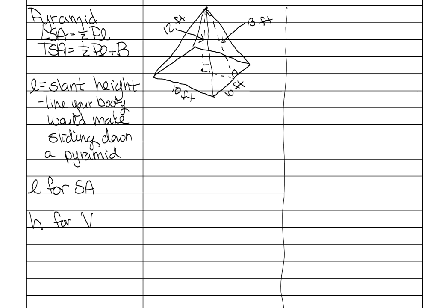A triangular pyramid is actually harder to draw. For a right triangle base, draw the two legs offset and connect them, then place the apex above the middle. The height dangles straight down from the top, and the slant height goes down the side. Here are all the dimensions for this pyramid.